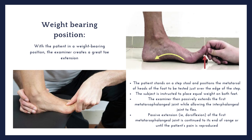In the weight-bearing position, the examiner creates a grade 2 extension in the same way as in the non-weight-bearing condition, but the subject places equal weight on both feet. The patient stands on a step stool, positioning the metatarsal heads just over the edge of the step. The examiner then passively extends the first metatarsophalangeal joint to end range while allowing the interphalangeal joint to flex. If the patient's pain is reproduced, the test is positive.